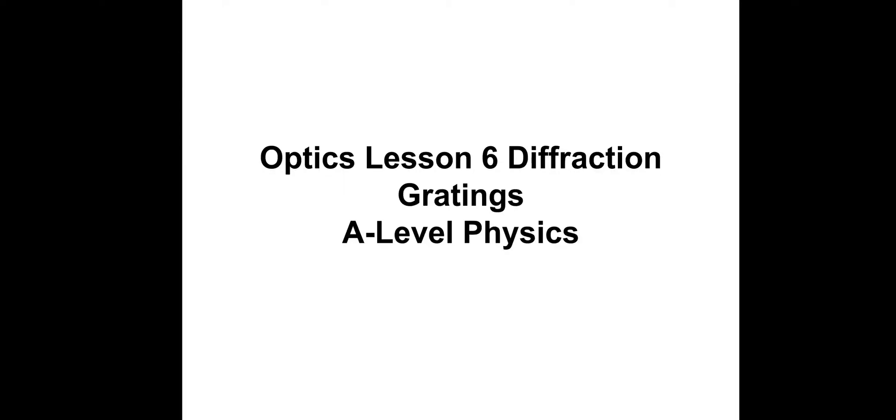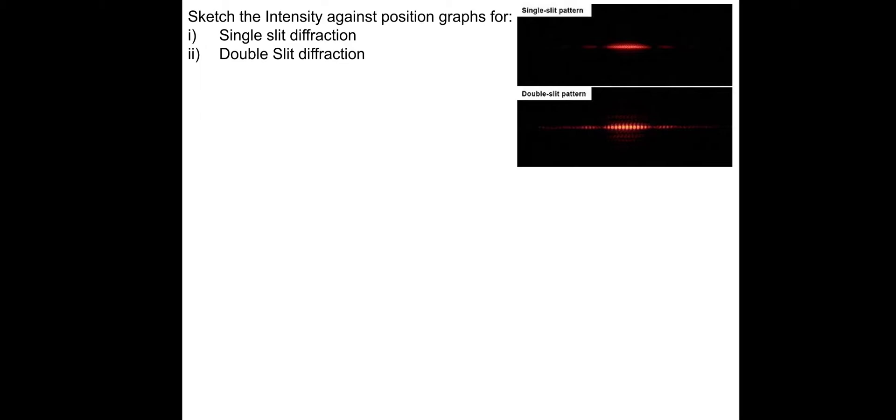Hi there, this is Optics Lesson 6 and this one is Diffraction Gratings. So first of all let's start with a recap of part of last lesson. I want you to sketch the intensity against position graphs for single slit diffraction and then double slit diffraction. If you want to pause and have a go.